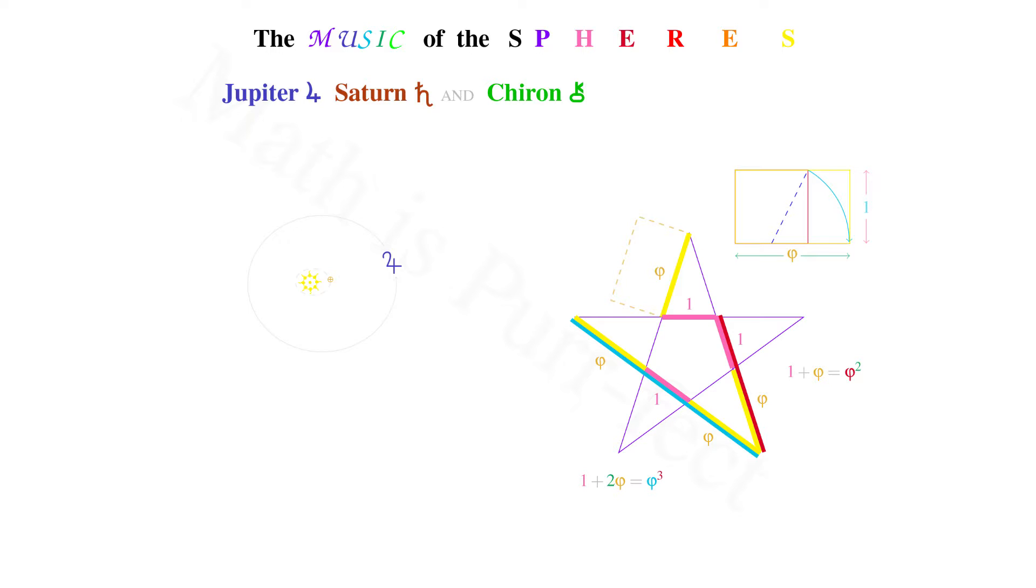Before we move on, it's important to note that Jupiter lies on the right side of the pentagram, whereas Saturn lies on its left. This gives an inference as to their nature when viewed in the Pythagorean sense.